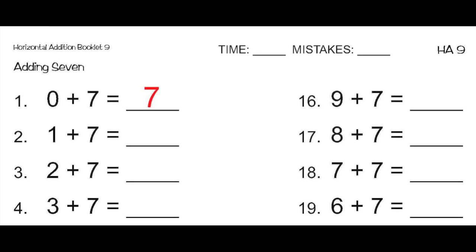Next is 1 plus 7. 1 plus 7 is going to be 1 more than the last one. So 1 plus 7 equals 8, 1 more than 7. Next, we're going to follow the order. So we have 2 plus 7, which equals 9, 1 more than 8. And 3 plus 7 equals 10.